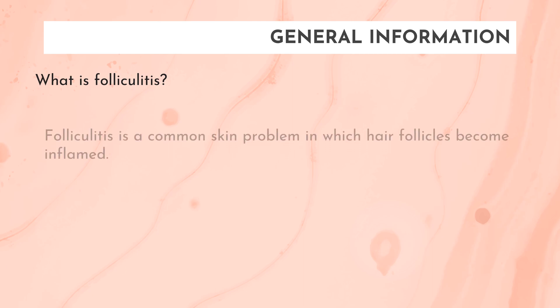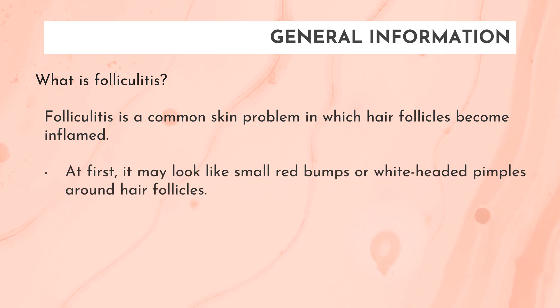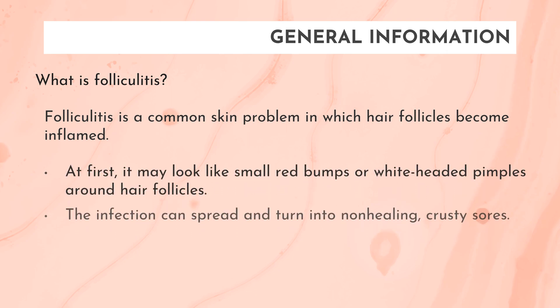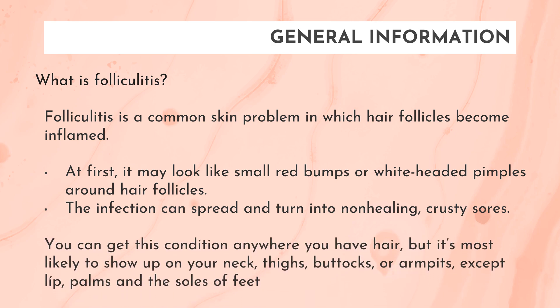Folliculitis is a common skin problem in which hair follicles become inflamed. At first it may look like small red bumps or white-headed pimples around hair follicles. The infection can spread into non-healing crusty sores. You can get the condition anywhere you have hair, but it is more likely to show on your neck, thighs, buttocks, or armpits — except the lips, palms, and soles of the feet.